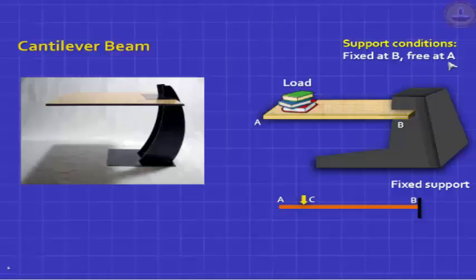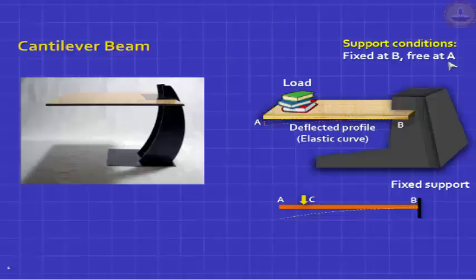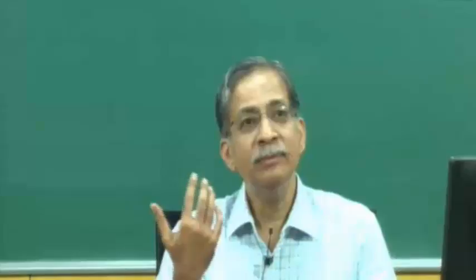Now let us put some load on the beam — some books placed on it. I have beam AB with a concentrated load at C. It will undergo a change in curvature — an elastic curve. If I remove the load, it comes back to its original position: that is elastic behavior. If you look carefully at the deflected shape A-C-B, not all of it will be curved. Which part will be straight and which part will be curved?